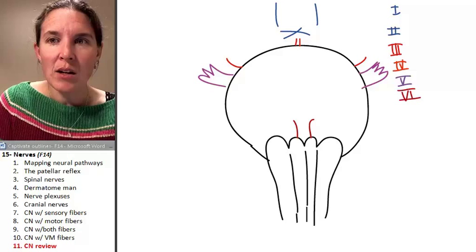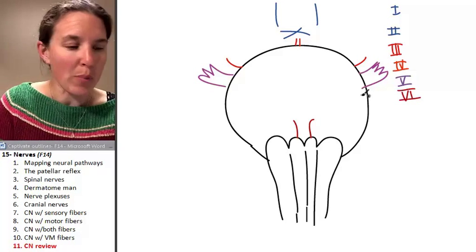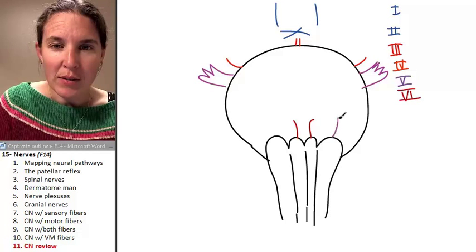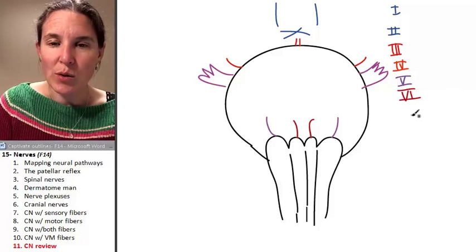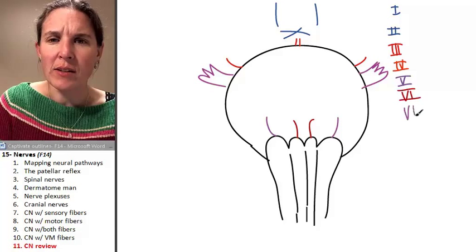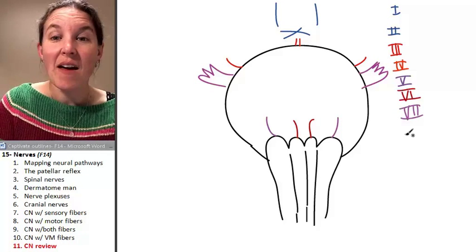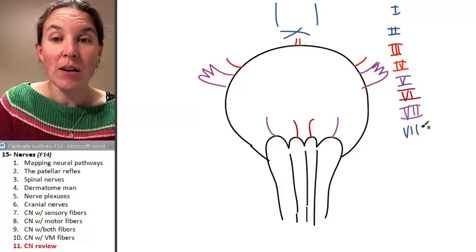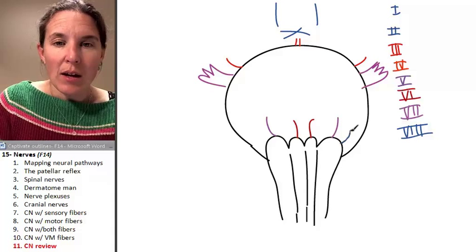Seven, what do you know about seven? Seven is definitely a both-er. Seven is coming out here. Eight, oops. I did it again. Seven, who was seven? Facial. Eight, vestibulocochlear, all sensory. Coming out about her.